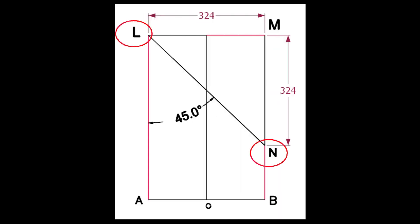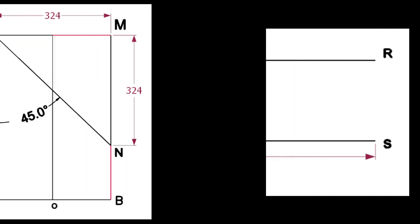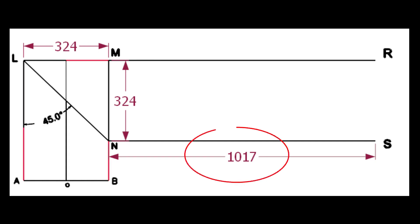Draw the line LN. We know the circumference of the pipe is 1017 millimeters. Draw the lines MR and NS.